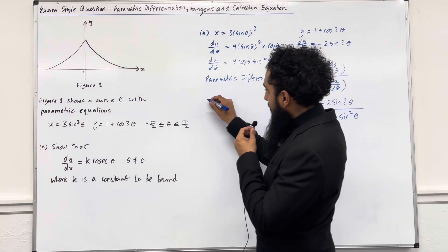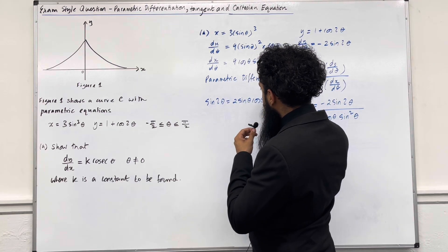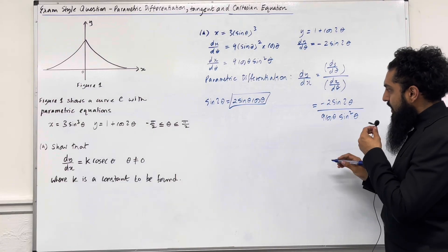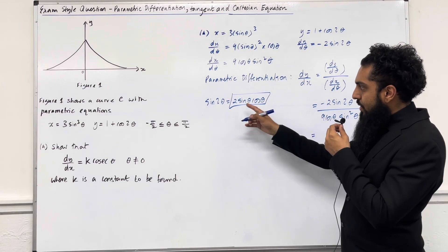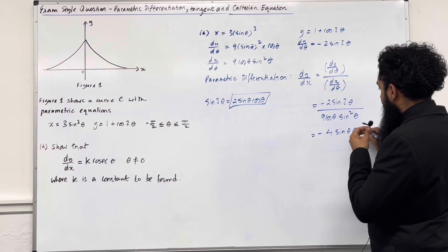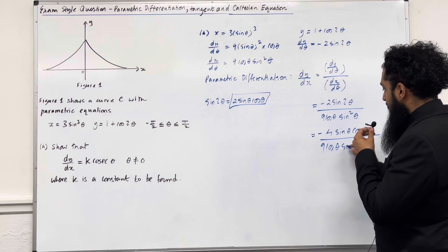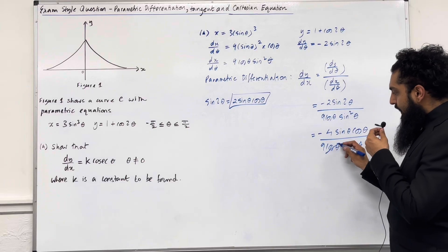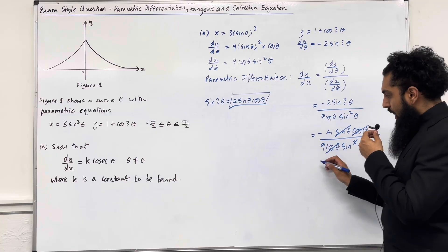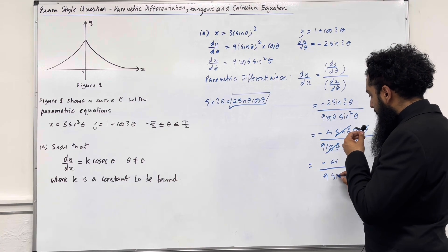Now I know that sine 2 theta is equal to 2 sine theta cos theta. So I can substitute 2 sine theta cos theta into the numerator. I get minus 2 multiplied by 2 sine theta cos theta, which is minus 4 sine theta cos theta, all over 9 cos theta sine squared theta. The cos theta cancels out, and this sine theta cancels one of the sine thetas in the denominator, giving minus 4 over 9 sine theta.